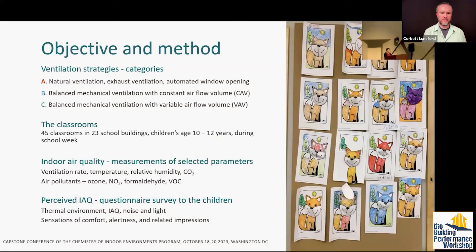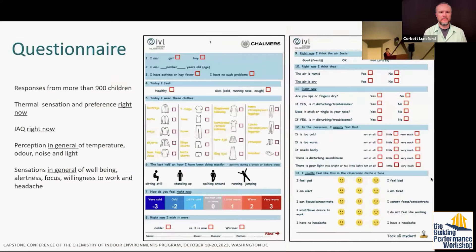We developed an acute questionnaire for the children, which is quite unusual — normally questionnaire surveys are directed to adults. The questionnaire covered thermal environment, indoor air quality, noise, and light, as well as questions on sensation of comfort, alertness, and other impressions. We received responses from more than 900 children across 45 classrooms, covering thermal sensation, odor, noise, light, alertness, focus, willingness to work, and headache.